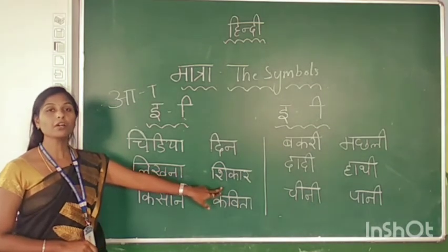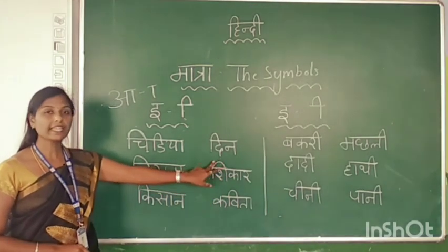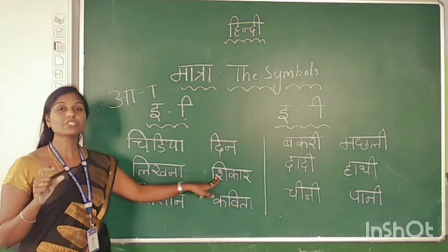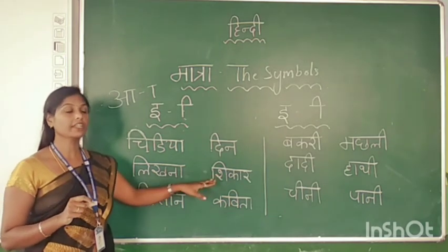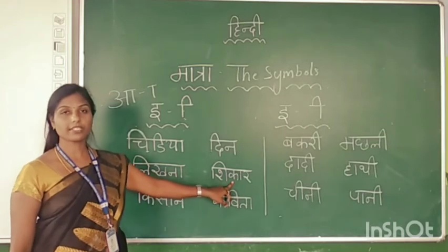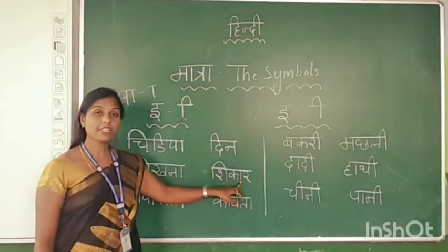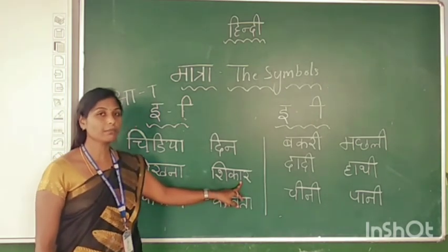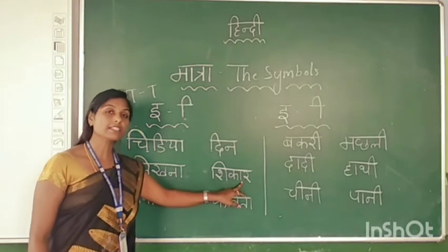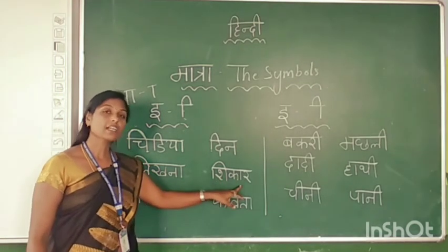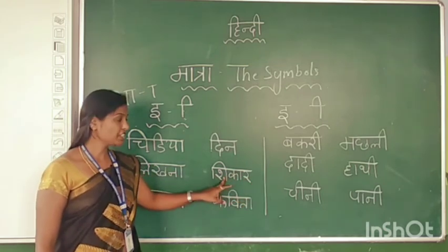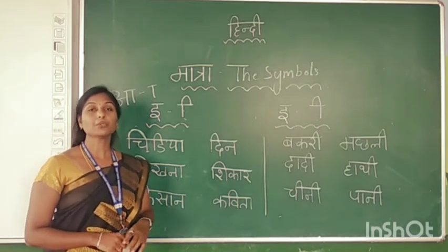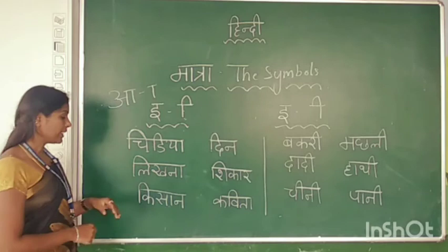The next word: the first letter is Sh — I join the symbol of E, so Sh plus E gives Shi. The next letter is Kha — we join the symbol of AA, giving Kha. Then R. Sh + Kha + R = Shikar. Shikar ka matlab hai? To hunt. Shikar means to hunt.